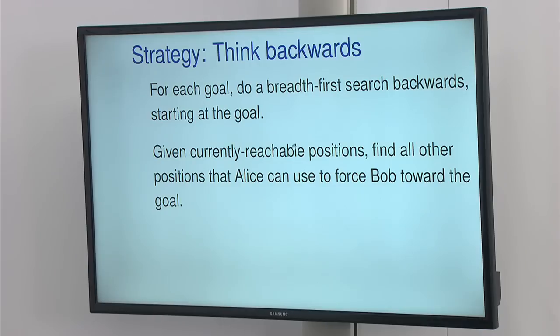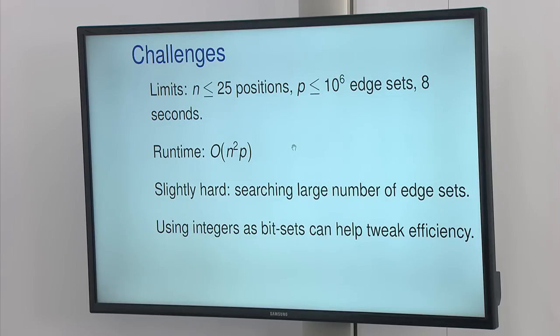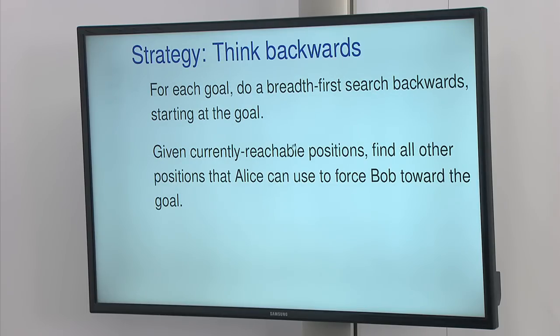Starting backwards, searching backwards, you can start at the goal that Alice wants to drive towards, and then given all the currently reachable positions, find all the other positions that Alice can use to force Bob toward the goal, and then repeat this. And you only have to repeat this up to 25 times for a given goal.